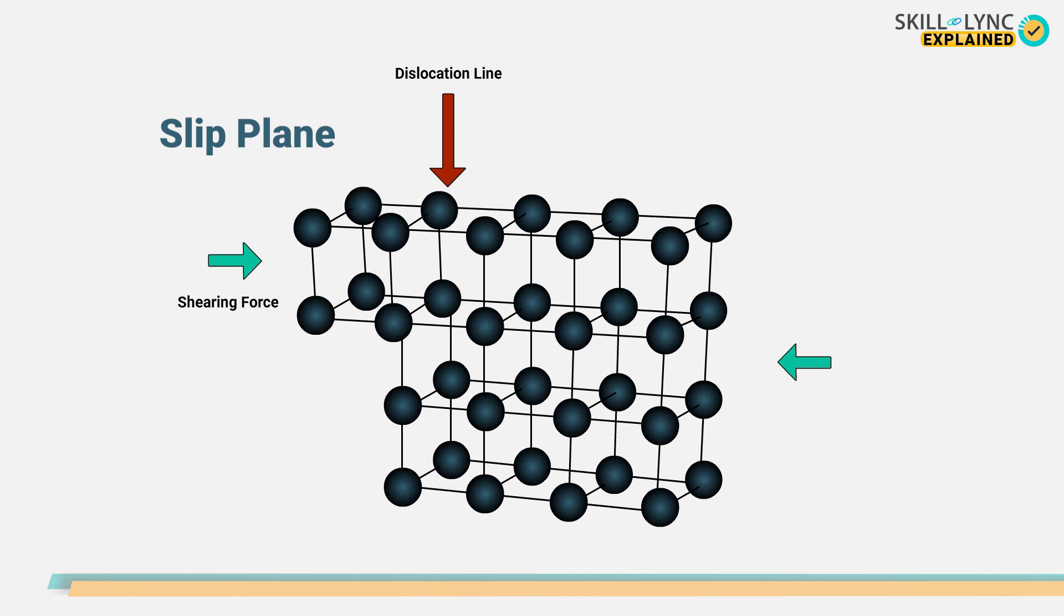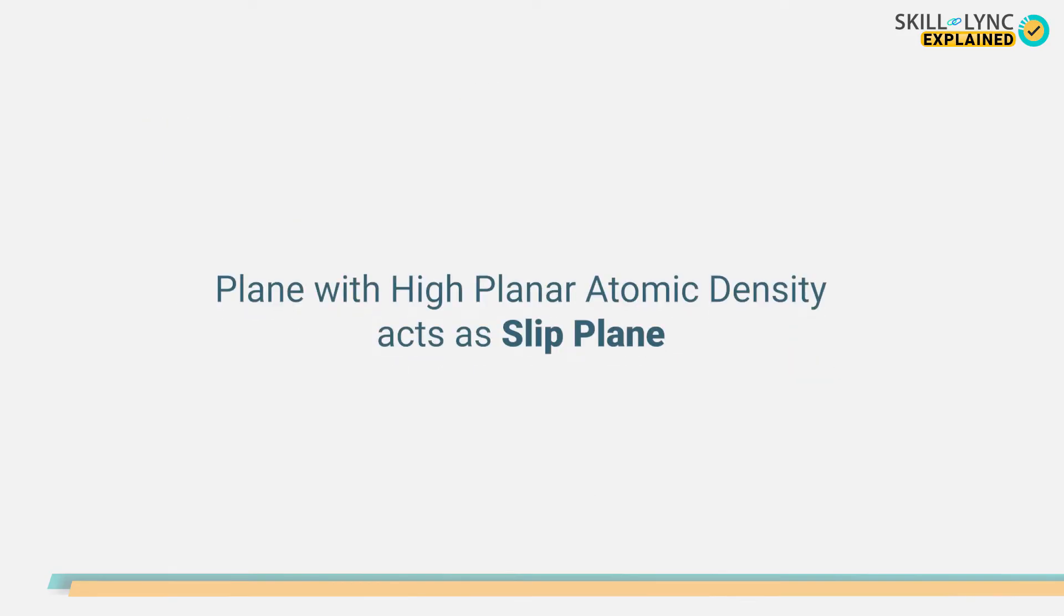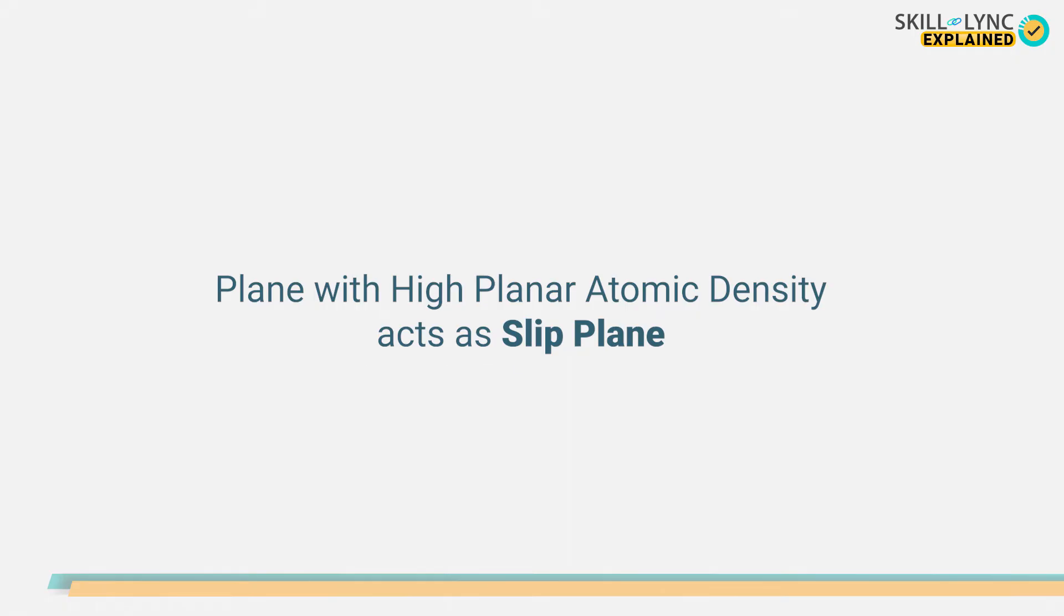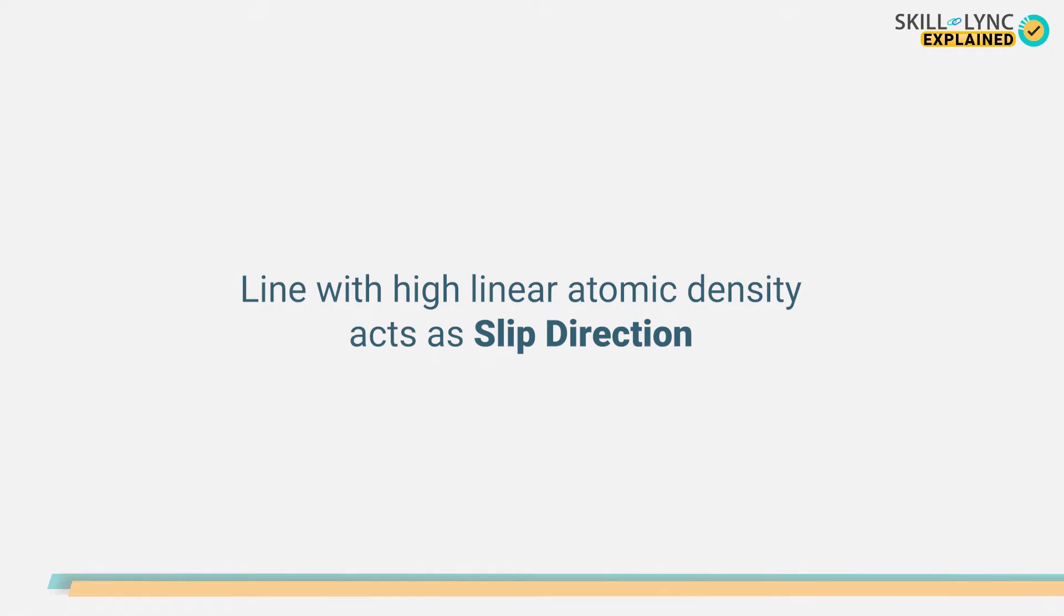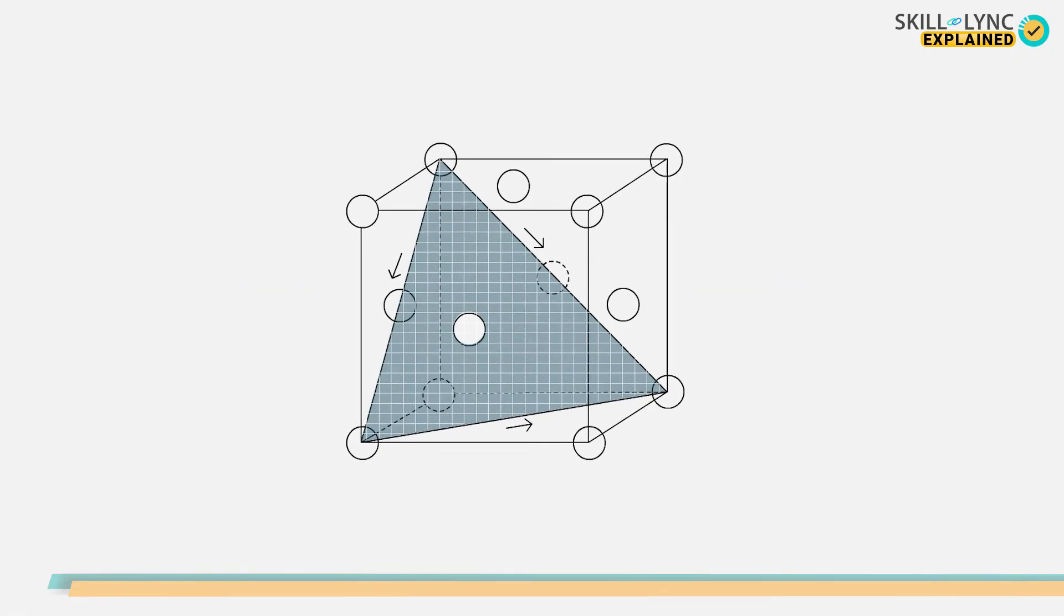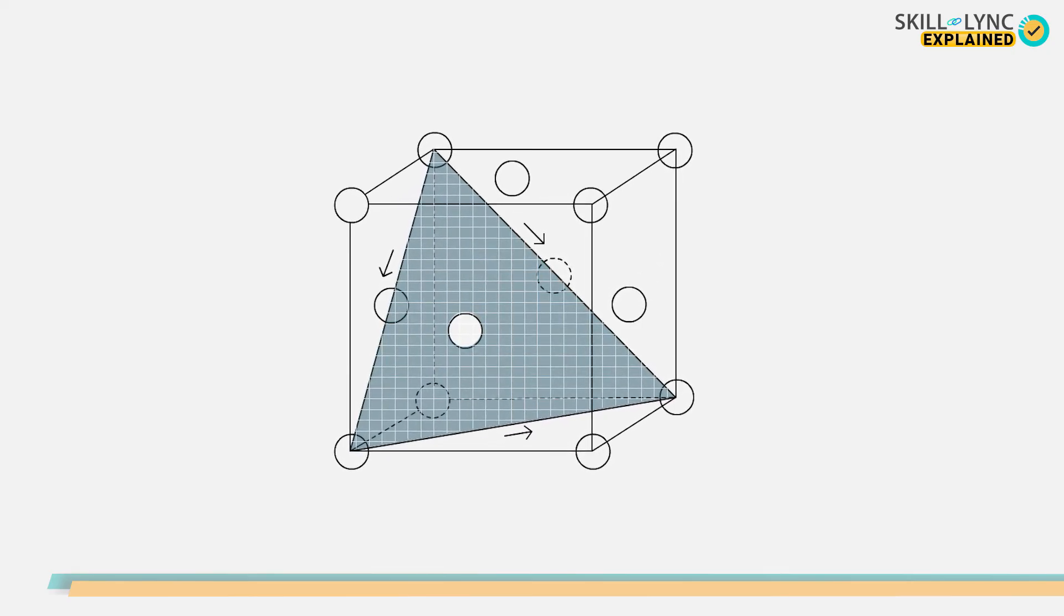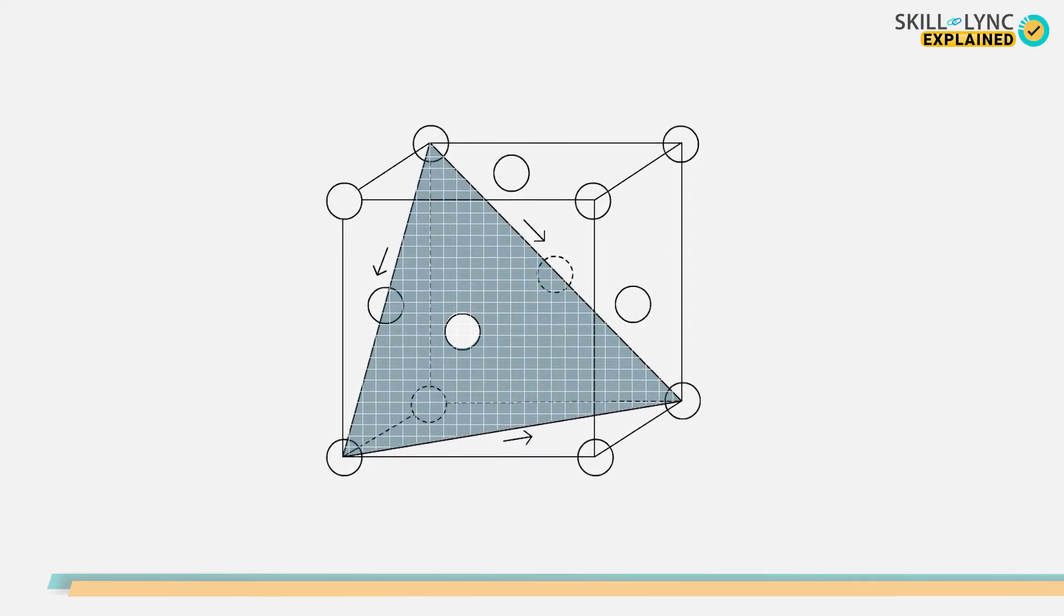The direction in which the slip moves is known as slip direction, and the plane in which the slip occurs is known as slip plane. The combination of the slip plane and the slip direction is known as the slip system. For a particular crystal, the plane that has more number of atoms will act as the slip plane, and in that plane, the direction which has more atomic density acts as the slip direction. The marked plane in the face-centered cube has more atoms than any other planes, and so it acts as the slip plane.